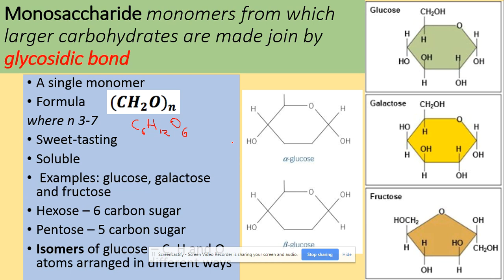Examples are glucose, galactose and fructose, and we've got two main types that you will be learning about in your A-level. We've got hexoses, which are the monosaccharides that contain 6 carbons, and pentoses, like deoxyribose and ribose, which have a 5-carbon sugar. In terms of isomers, for glucose the carbon, hydrogen and oxygen atoms can be arranged in different ways. So as we can see here, we've got alpha and beta glucose, and the bonding between those atoms is different.